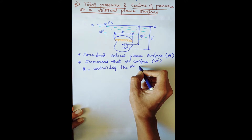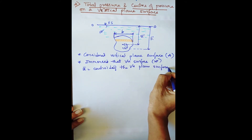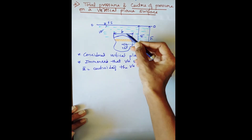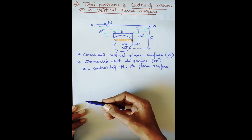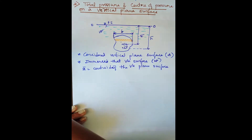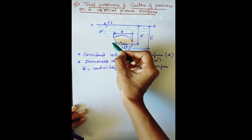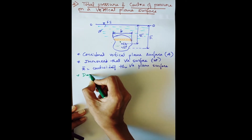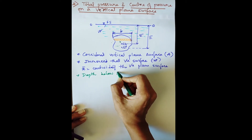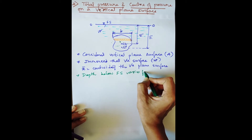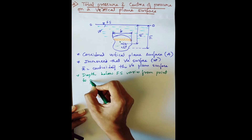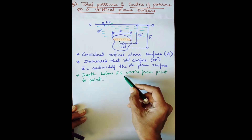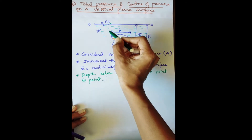In the case of a horizontal plane surface, any point on the surface has the same depth. But here, for a vertical plane surface, different points have different depths from the free surface. So the depth below the free surface varies from point to point — it does not remain the same.